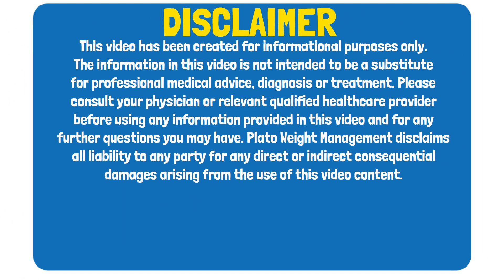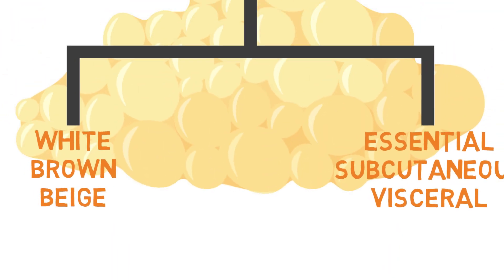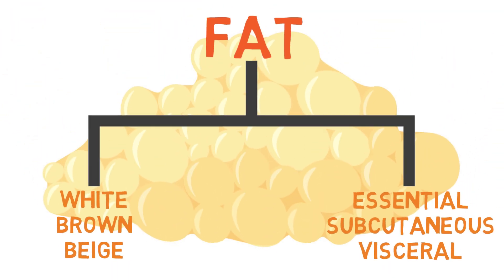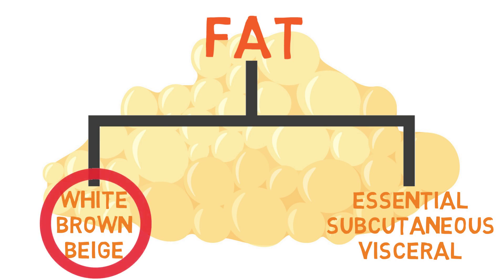In essence, fat can be divided into white, brown, and beige subtypes. And it can also be categorized as essential, subcutaneous, or visceral fat. Let's begin by examining the differences between white, brown, and beige fat.